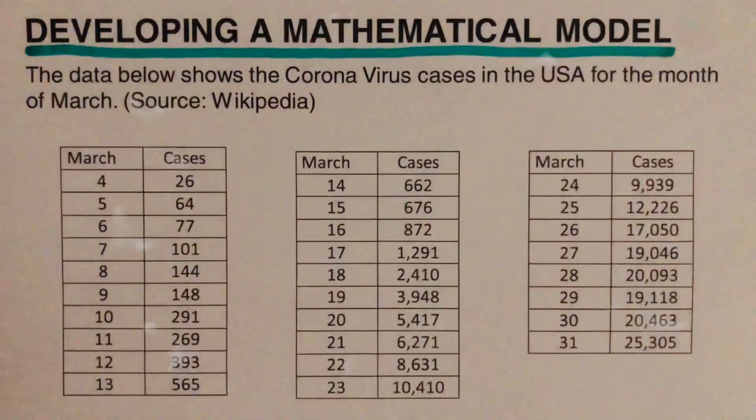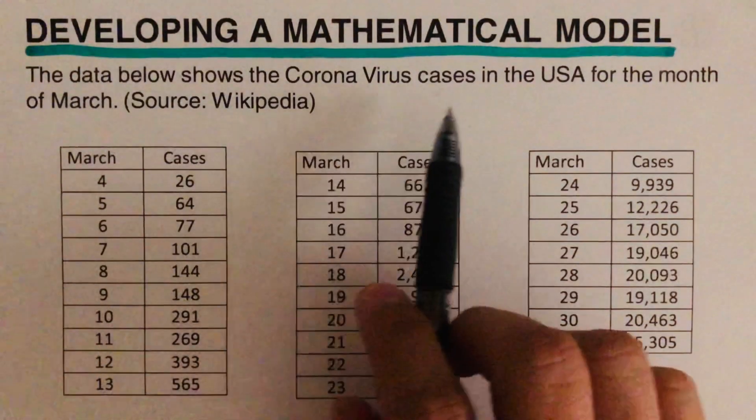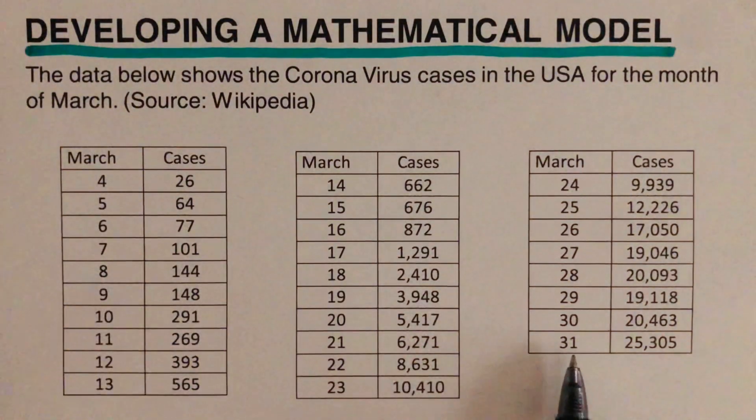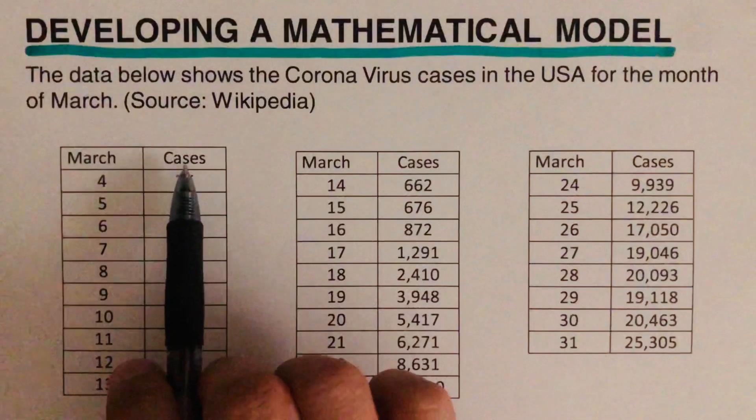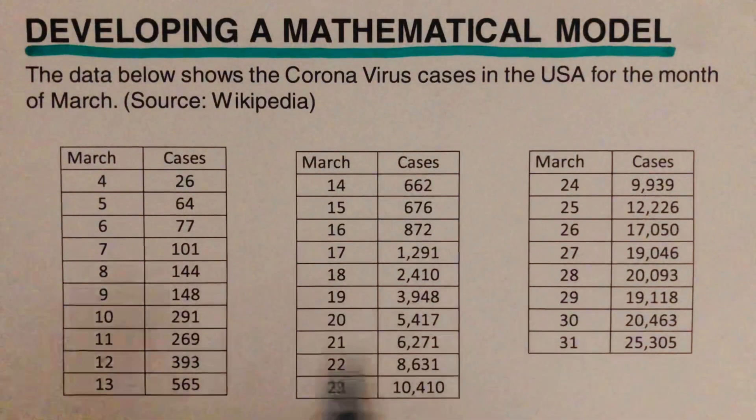Hello everyone, in this video we are going to develop a mathematical model using Desmos. We are given the data that we have here and we're supposed to determine what equation would work for this data. It's an approximate equation that would work for this, not a perfect equation but it's going to be close to that actual data. The data below shows the coronavirus cases in the USA for the month of March. This was taken from Wikipedia so March 4th all the way to 31st. We will take this as the x for the dates and then the cases would be the y. Pretty much we need to determine what equation would work for this, what mathematical model would work for this data that we have here.